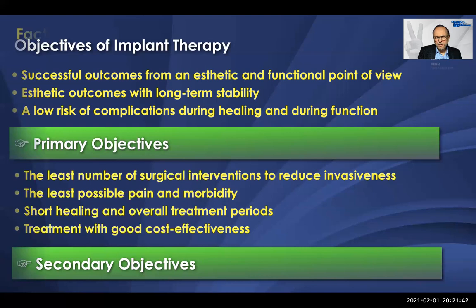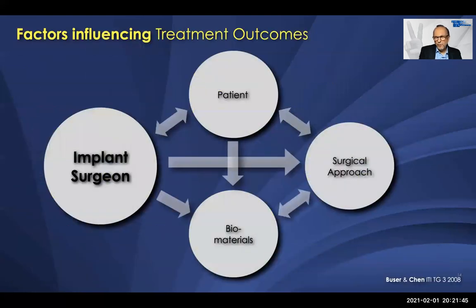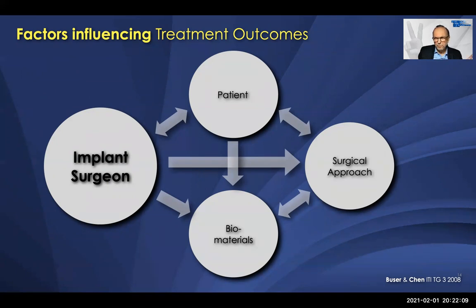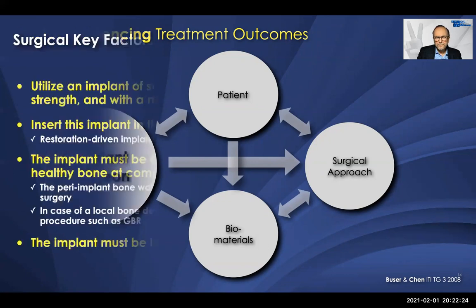From the ITI Treatment Guide Number Three (2008) with Stephen Chen, there are four factors that influence surgical treatment outcomes. The surgeon is very important — probably about 80% of long-term success — because the surgeon analyses the patient's risk profile, recommends a surgical approach, and selects the biomaterials and the right implant.